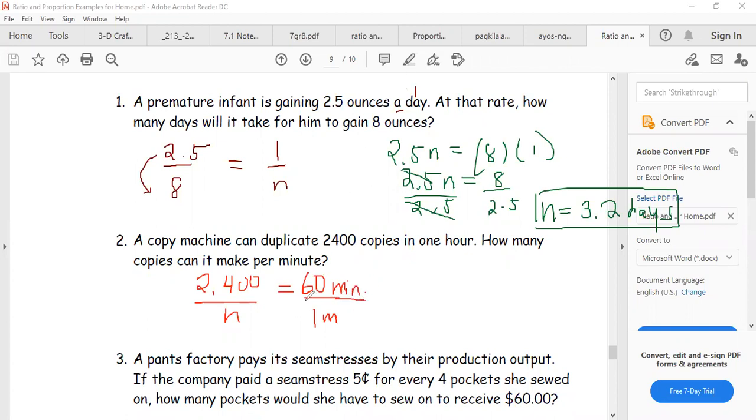And then do the cross multiplication. One times 2,400 and n times 60. So 60 n is equal to 2,400 times 1. 2,400 times 1 is 2,400. And then what's next? We will divide both sides by 60. Cancel out this 60. What will remain is n is equal to 2,400 divided by 60 is 40. So the answer would be 40, 40 what? 40 copies. That would be the final answer.